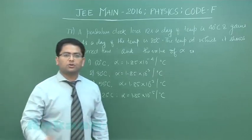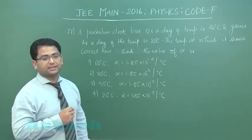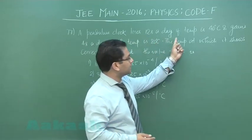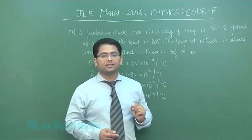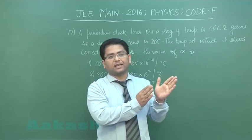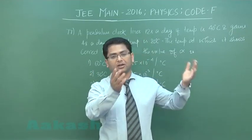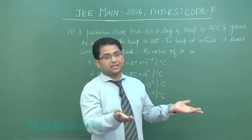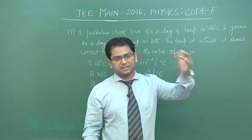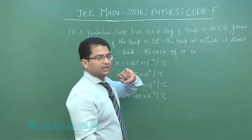Question 77 is a straightforward question from thermal expansion — specifically linear expansion. A pendulum clock loses 12 seconds a day when the temperature is 40°C. If the temperature is higher than the specified value, the length increases, the time period increases, the clock gets slower, and it loses time. So 40°C is above the specified limit. The clock gains 4 seconds a day when the temperature is 20°C.